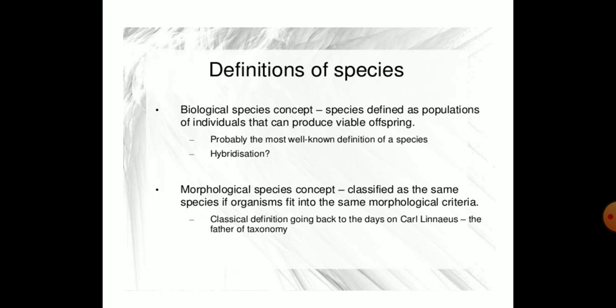Can hybridization occur? Yes, there are chances — there are some genetically modified organisms where hybridization also occurs. So probably the most well-known definition for species is that a species is defined as a population of individuals that can produce viable offspring.